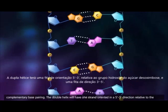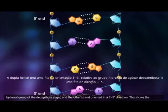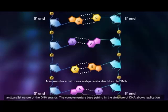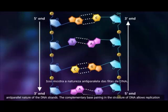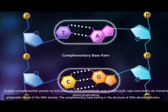The double helix will have one strand oriented in a 5' to 3' direction relative to the hydroxyl group of the deoxyribose sugar, and the other strand oriented in a 3' to 5' direction. This shows the anti-parallel nature of the DNA strands. The complementary base pairing in the structure of DNA allows replication to be executed in a semi-conservative manner.